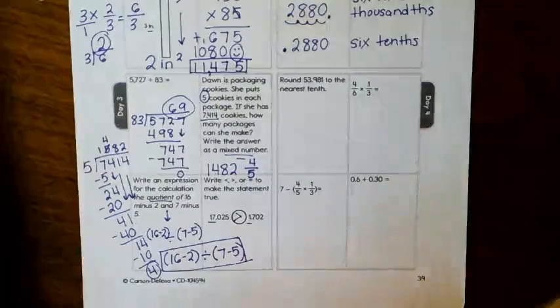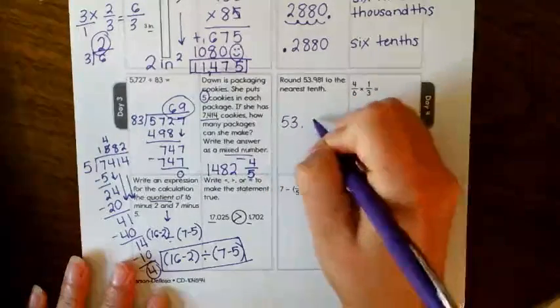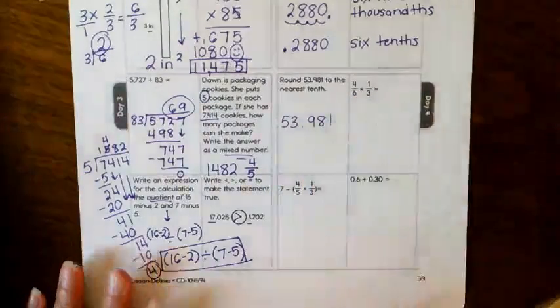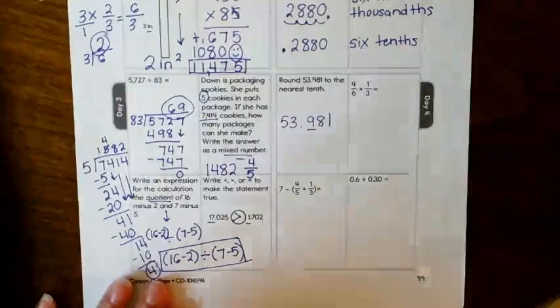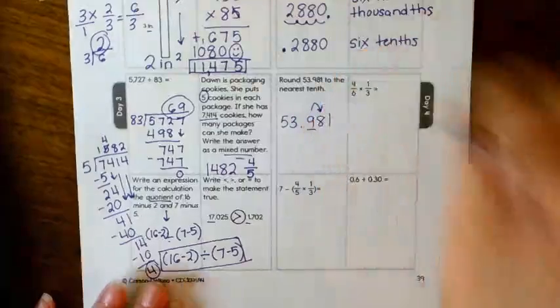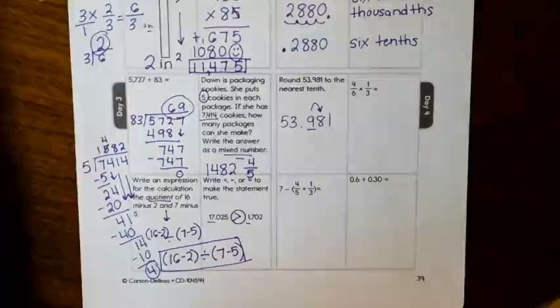The first one is rounding to the nearest tenth. So I'm going to rewrite my number so that we can see it really well. The tenths place is this right here, the 9. You look next door. 5 or above, give it a shove, 4 below, let it go.